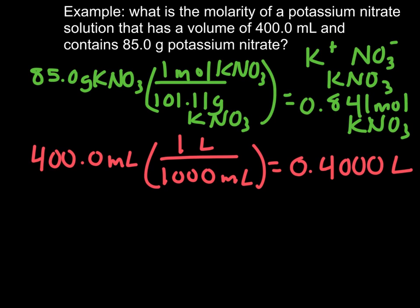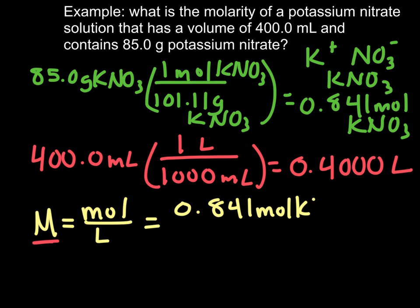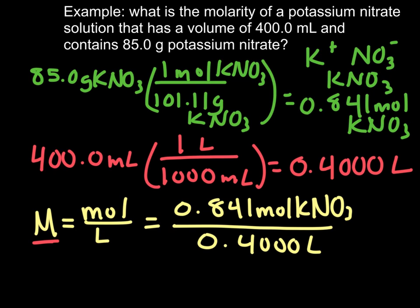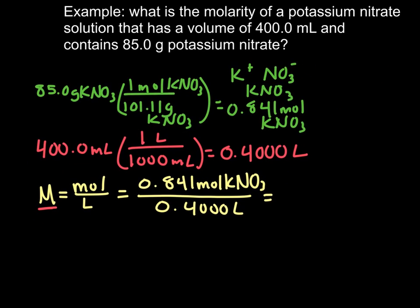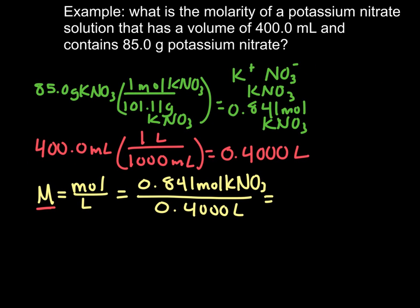Our last step is to calculate molarity, and remember it's an equation. Molarity is equal to the moles divided by the liters. Now we don't have to create it as a proportion this time, because we literally want molarity. We want the capital M this time. So we're going to take our moles, 0.841 moles of KNO3, and we're going to divide it by our 0.4000 liters. Let me shrink this all down a little bit. I need some room. And when we do that math, keeping our three sig figs, our answer that we report is 2.10 molar KNO3.